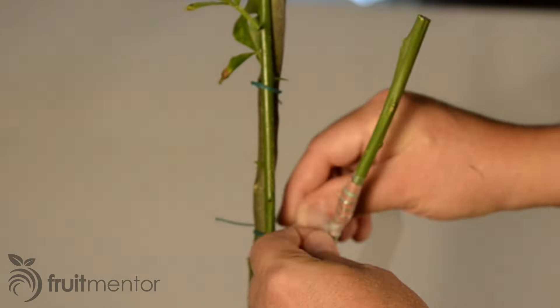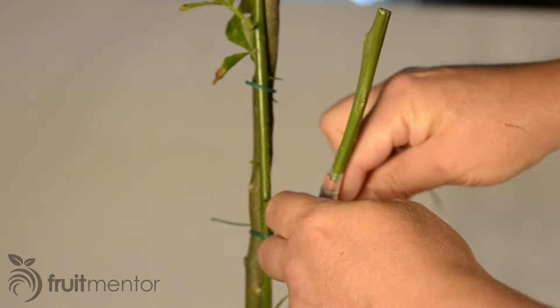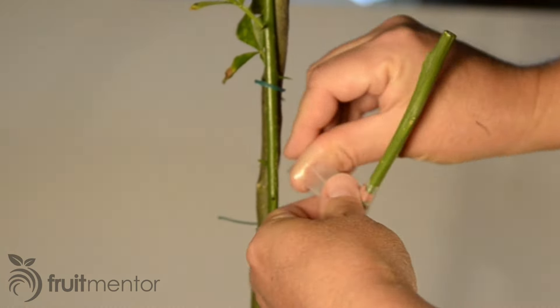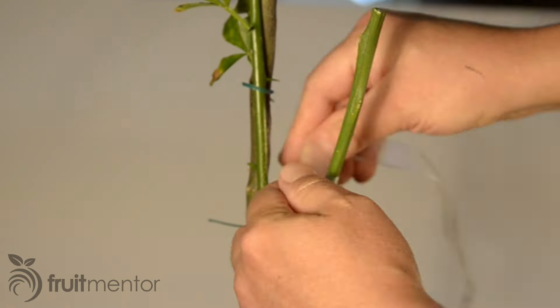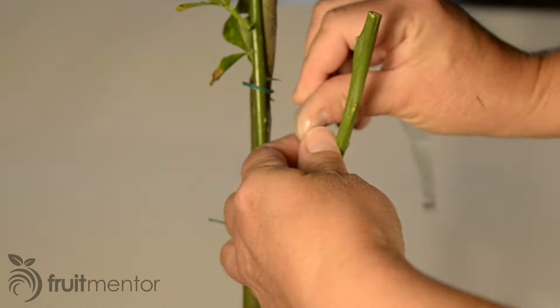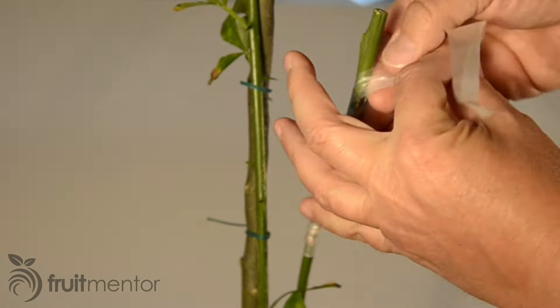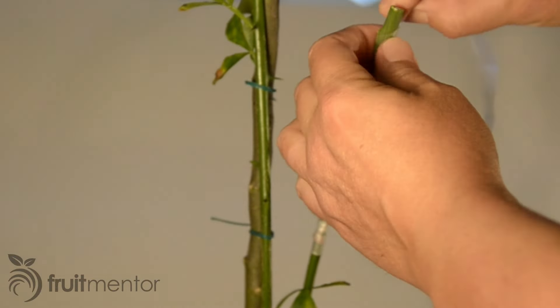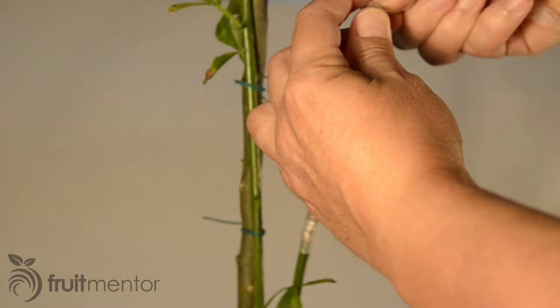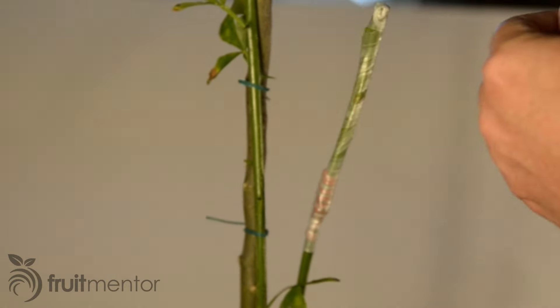Next I wrap the graft with the second layer of Parafilm. I wrap starting from the bottom, overlapping as I go up. Overlapping the layers keeps the graft from drying out and will also keep out rainwater. Other than the buds, I completely wrap the scion including the cut end.